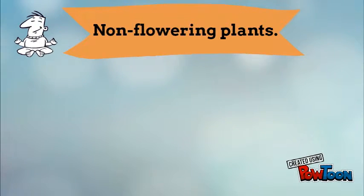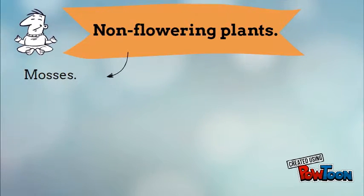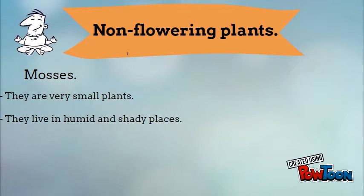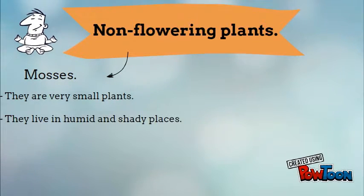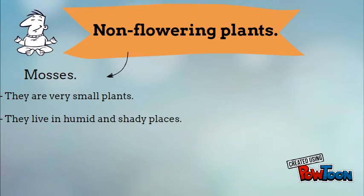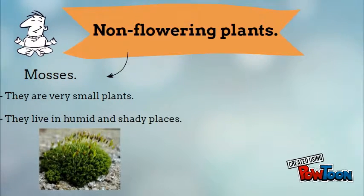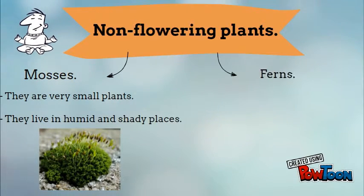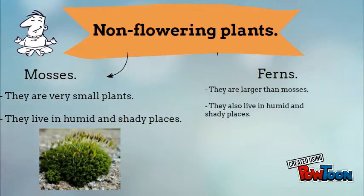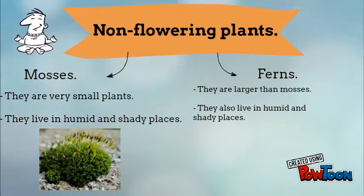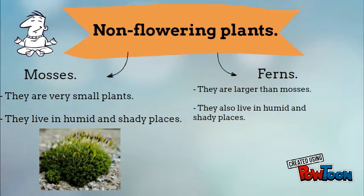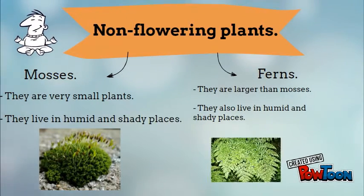Let's talk about non-flowering plants. They can be mosses — they are very small plants and they live in humid and shady places. Or they can be ferns — they are larger than mosses and they also live in humid and shady places.